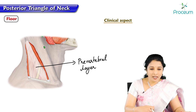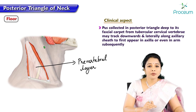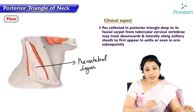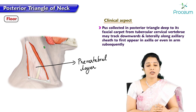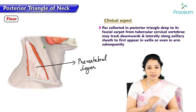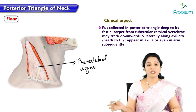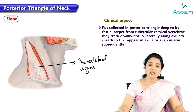The prevertebral layer forms a deep fascial carpet over the floor structures. Pus collected in the posterior triangle deep to this fascial carpet — from a tubercular cervical vertebra — may track downwards and laterally along the axillary sheath, first appearing in the axilla and subsequently draining into the upper part of the arm.